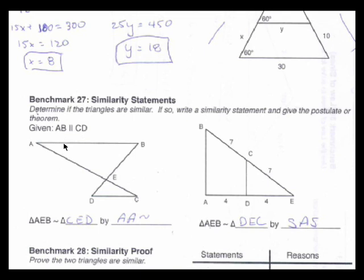From this, because they are parallel, we have angle A and angle C being alternate interiors. We also have the vertical angles, right here, angle AEB and angle DEC congruent, so vertical, so that right there is enough to prove that these two triangles are similar by angle-angle similarity.